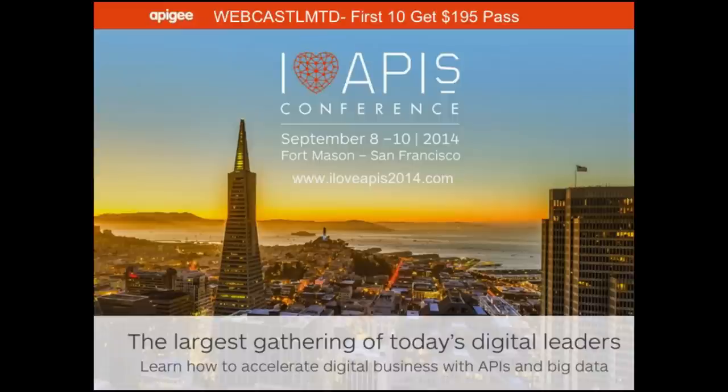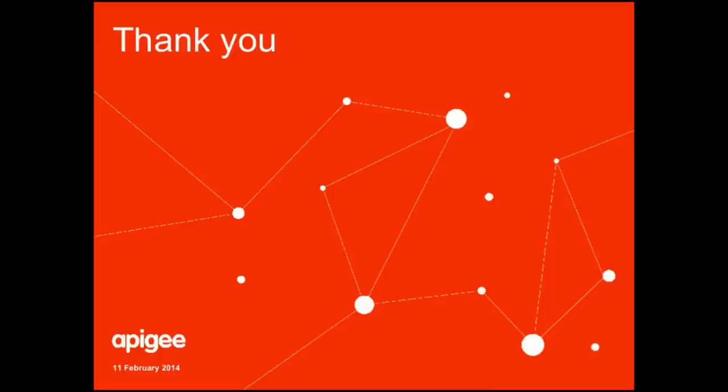We're out of time, but before we go, I want to remind you about the conference — there's a coupon code on the top, and the first 10 people to sign up will get in at $195. We'll all be there and we really want to talk to you about what's going on in your company. We can show you a little bit more about how we built our data warehouse, the technologies that Apigee uses, and if you're already a customer of Apigee, we can show you the technologies you can already use. Hope to see you there. Thank you.